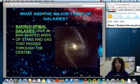There are barred spiral galaxies. And those have that bar-shaped area of stars and gas that pass right through the center. And you can see that in the picture on the screen, that bar or that line going right through that center bulge.